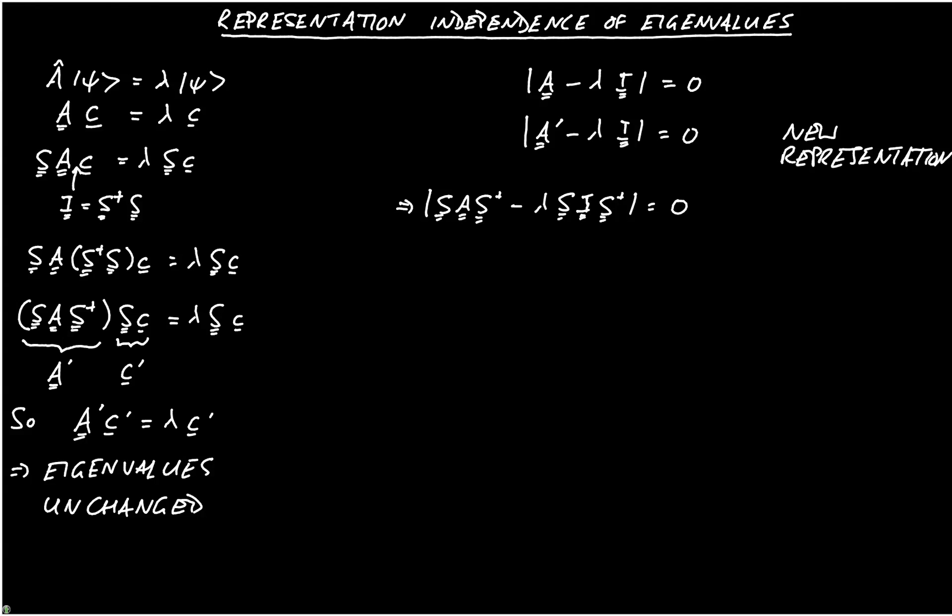I've maybe skipped a couple of steps here. So we could initially transform I to S times S dagger, and then having done that, we could insert an I inside it, but it should be fairly clear what we've done here.